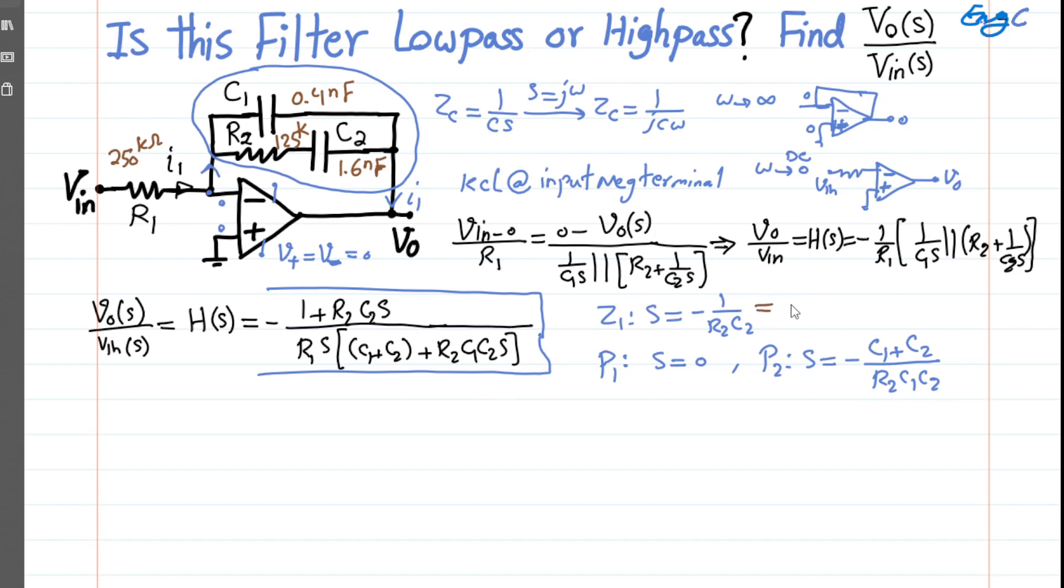Now, if you substitute the values given here, then what you get for the provided values in terms of the position of poles and zeros, the only zero we have turns out to be at -5,000 by substituting R2 and C2. The values of 125 kΩ and 1.6 nF, then we get -5,000 radians per second or 5 kiloradians per second.